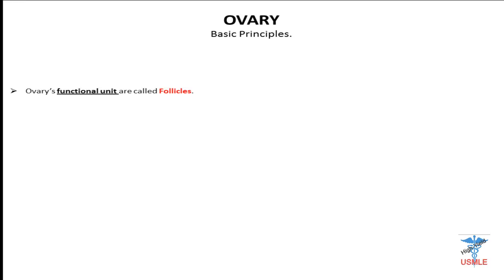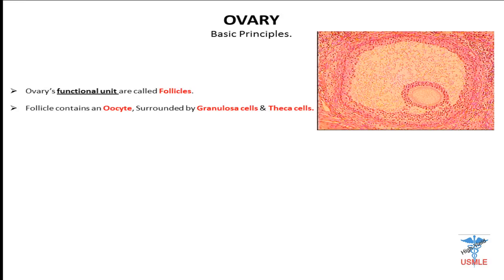Ovaries contain these functional units which are called the follicles. Each follicle contains an oocyte surrounded by granulosa cells and theca cells. If we take a follicle and put it under a microscope, we're going to see the oocyte surrounded by granulosa cells — all these cells around here. And surrounding the granulosa cells are these cells called theca cells.